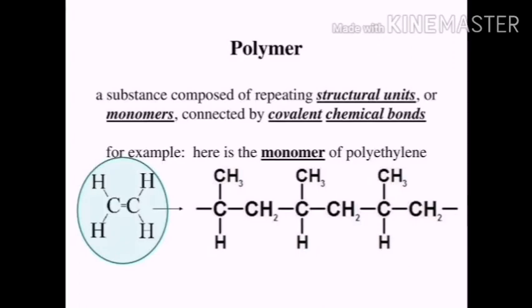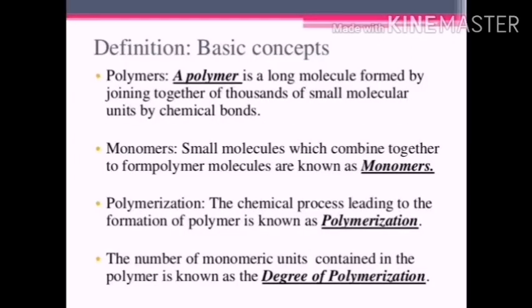What is the monomer of polythene? A polymer is a long molecule formed by joining together thousands of smaller molecular units by chemical bonds. A monomer is the small molecule which combines together to form polymer molecules. The chemical process leading to the formation of a polymer is known as polymerization. The number of monomeric units contained in the polymer is called the degree of polymerization.